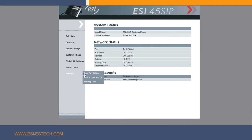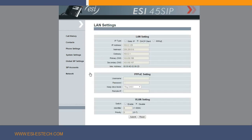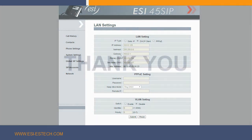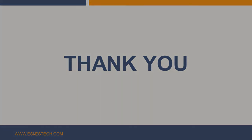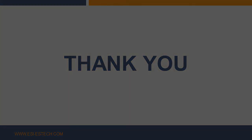Hovering over the Network option in the menu on the left will bring up another menu. Click on the LAN port settings, and here you can change the Network setting to Static IP and enter the IP address information. This concludes this short video on changing the ESI SIP45 phone from the factory default of DHCP to use a static IP address. I hope this information has been informative for you, and I would like to thank you for watching.